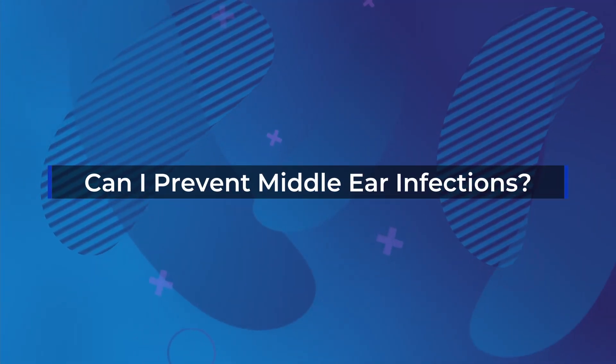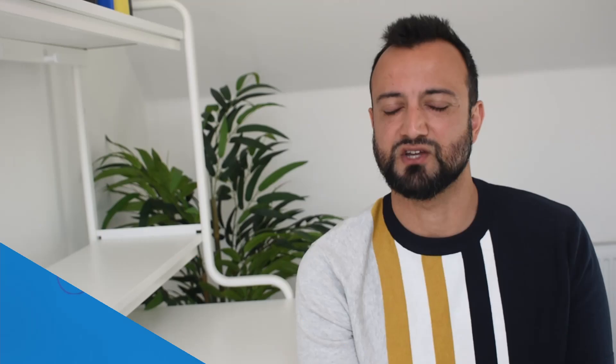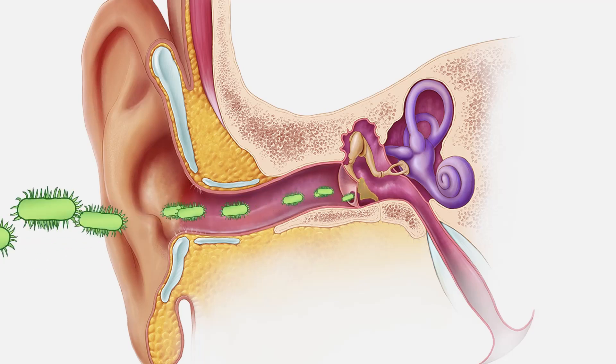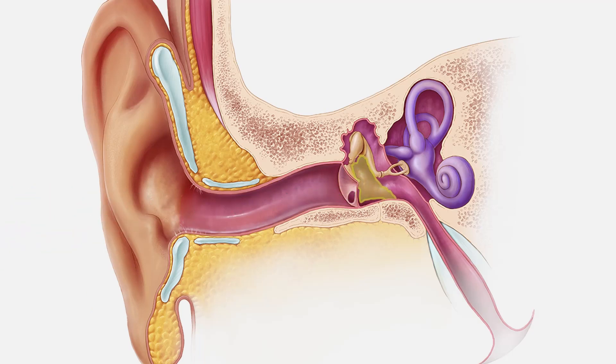Middle ear infections are more difficult to prevent than outer ear infections, as most are caused by viruses — the same common viral infections circulating in the general population that your child is probably not yet immune to. They are the same viruses that cause common colds, coughs, and tummy bugs. There isn't a huge amount you can do to prevent these, other than the usual measures such as hand washing and eating and sleeping well to optimize your immune system. Thanks for watching — till next time, stay healthy.